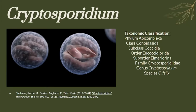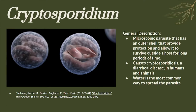Here is the taxonomic classification of the genus Cryptosporidium. They are microscopic parasites with an outer shell that provides protection and allows them to survive outside the host for long periods of time. It causes Cryptosporidiosis, a diarrheal disease in humans and animals. Water is the most common way to spread the parasite.